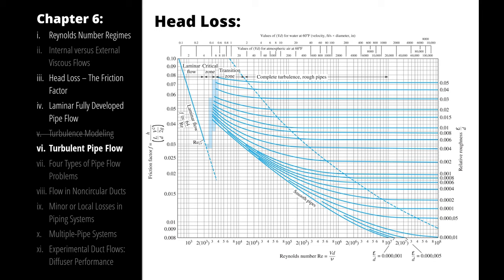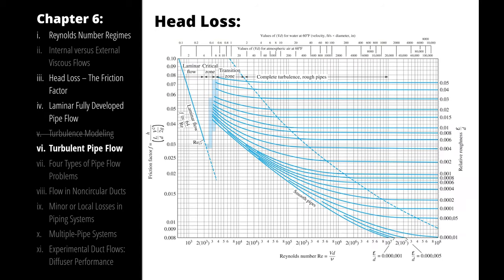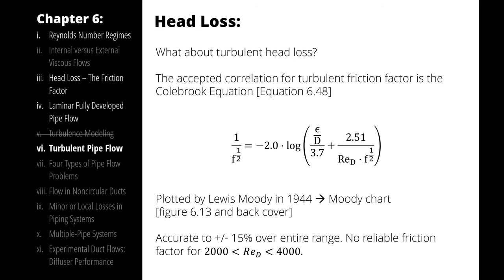That average bump height we represent with an epsilon. Here's a table of some example epsilon values for a variety of substances. If you're buying a pipe, you can either check with the manufacturer to figure out what the epsilon value would be, or you can go through a third-party testing service, or you can measure it yourself. But armed with an epsilon value and a diameter, we can calculate a relative roughness and use that value with our Reynolds number to look up a friction factor on the Moody chart that is about plus or minus 15% accurate across the entire range of the chart.